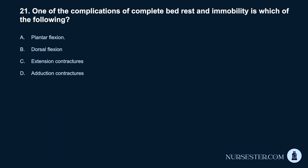Question 21. One of the complications of complete bed rest and immobility is which of the following? A. Plantar flexion. B. Dorsal flexion. C. Extension contractures. D. Adduction contractures.